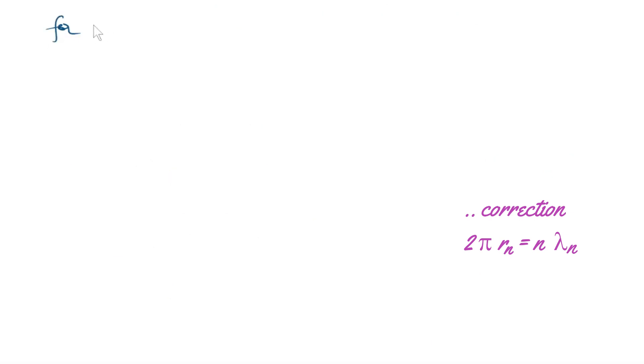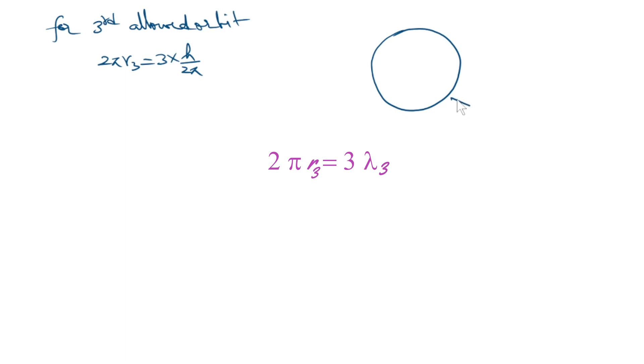For the third allowed orbit, 2 pi R3 equals 3 multiplied by H by 2 pi. And the wave picture should look like this. Here is the third allowed orbit.